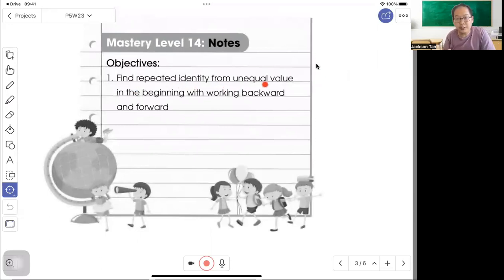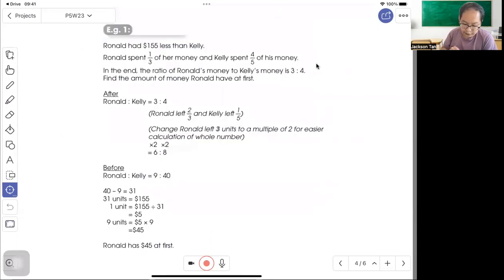Mastery level 4-5: repeated identity from unequal value in the beginning. Work backwards. Ronald had $155 less than Kelly. Ronald spent one-third, Kelly spent four-fifths, and the ratio is 3 to 4. Work backwards.